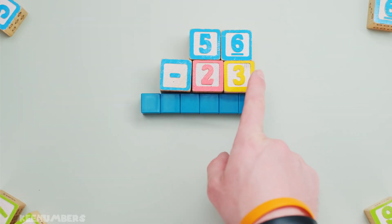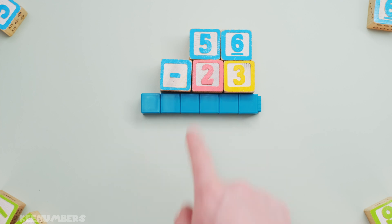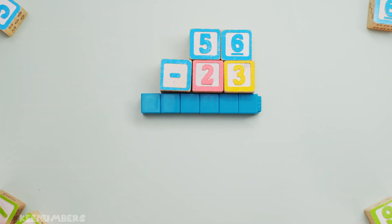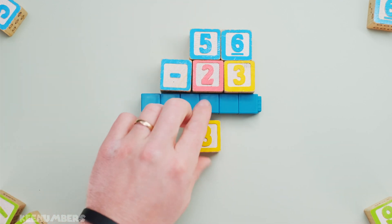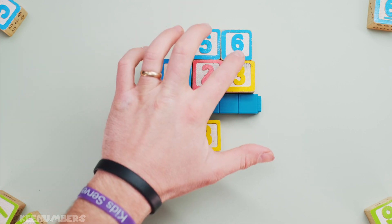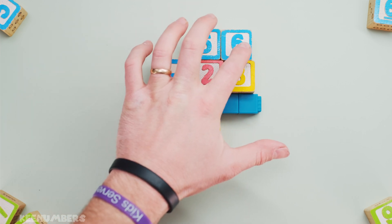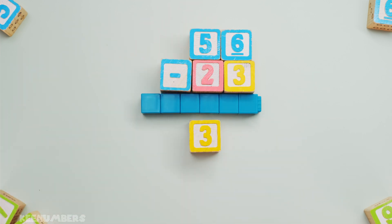56 minus 23. If you have 5 tens and you take away 2 tens, good news! That's 3 tens! Now if you have 6 ones and you take away 3 ones, good news! That's 3 ones, so this is simply going to be 33.